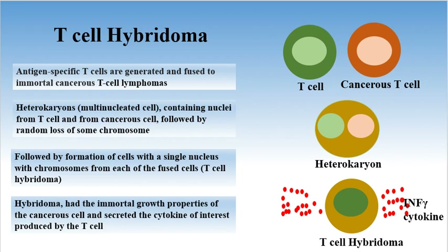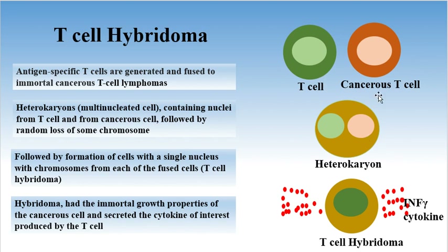Production of T-cell hybridoma can be achieved by fusing an activated or antigen-specific T-cell with immortal cancerous T-lymphoma cells. The resulting heterocaryons contain nuclei from both the T-cell and the cancerous cell, and are genetically distinct.